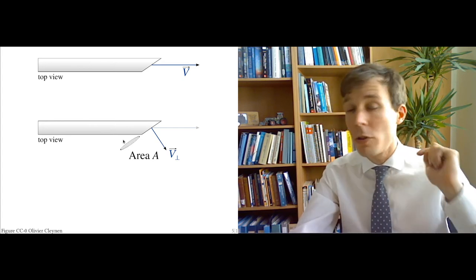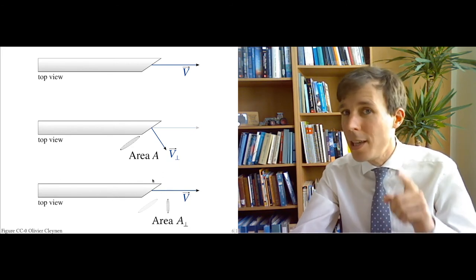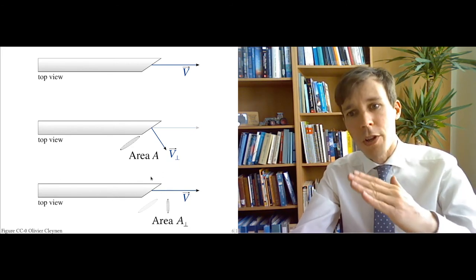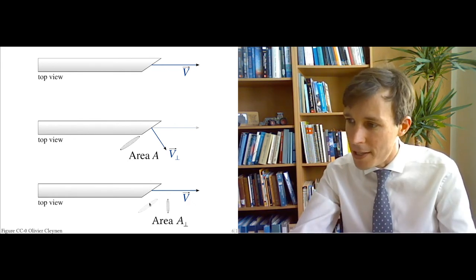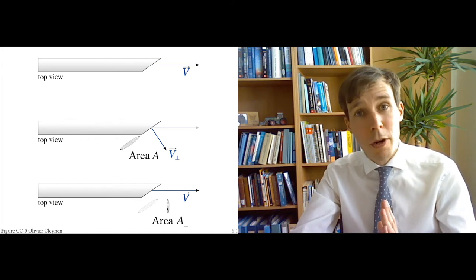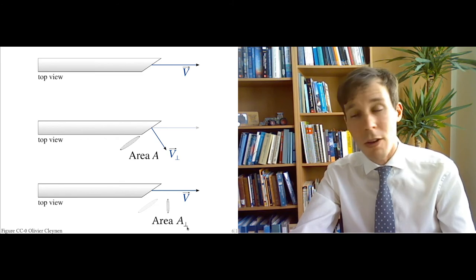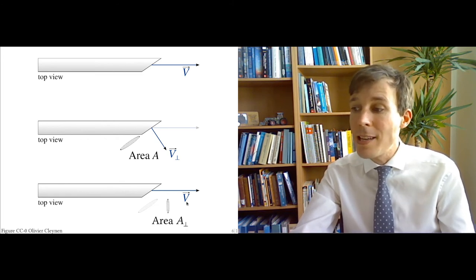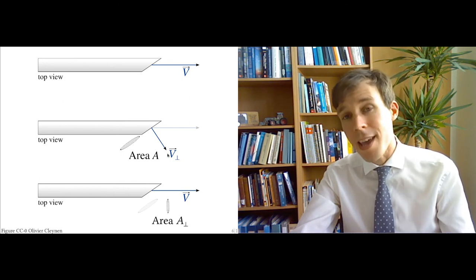Or you could do the other way, you could keep the velocity V here, but then it is the area which you project to be perpendicular to V. And so instead of taking this ellipse here, you project this ellipse here on the plane perpendicular to V, so that now you get the area A perpendicular here. So you take either the multiple of V and A perpendicular, or the multiple of A and V perpendicular.